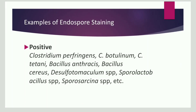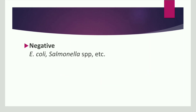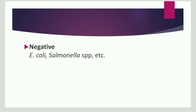An example of endospore-forming bacteria: positive results in endospore staining are given by species of Clostridium and Bacillus. Negative results are given by E. coli and Salmonella. Hope the concept of endospore staining is clear. For more such videos, please subscribe to our channel, and if you liked the video, please like and share with your friends.